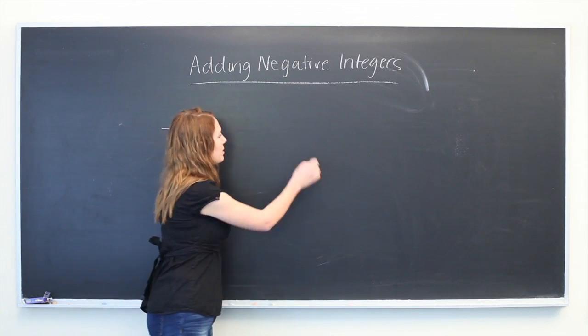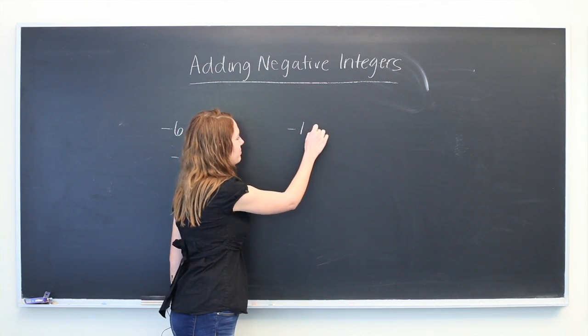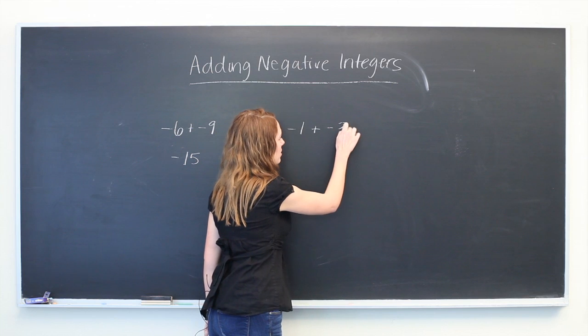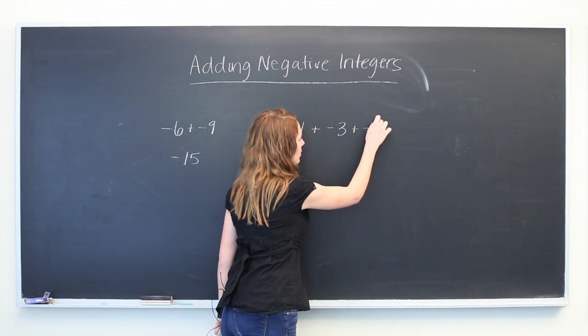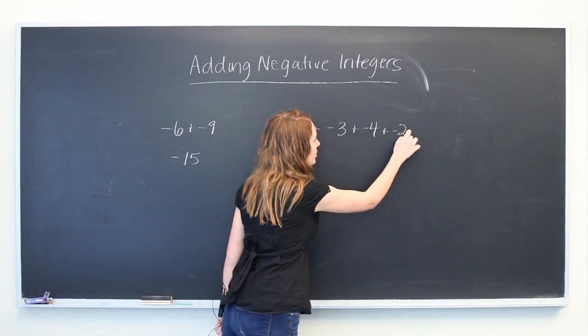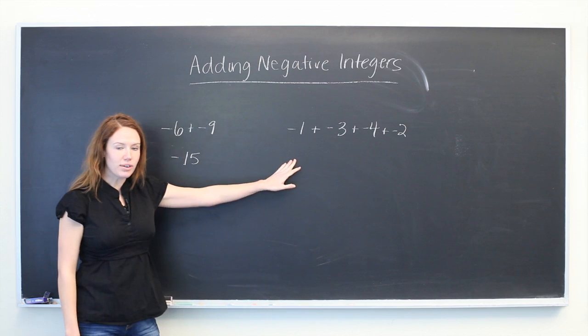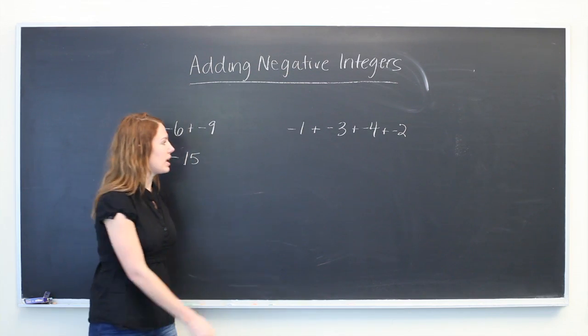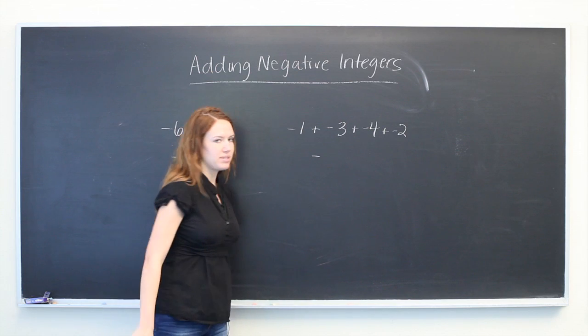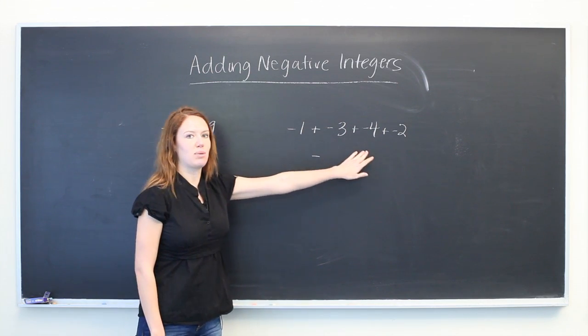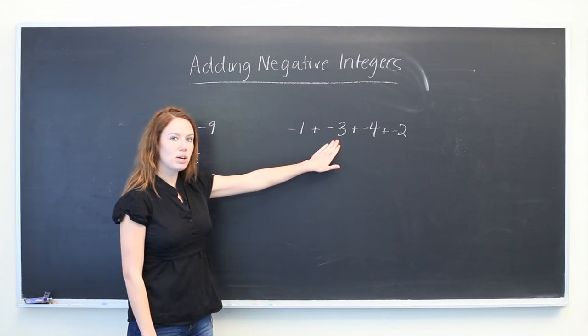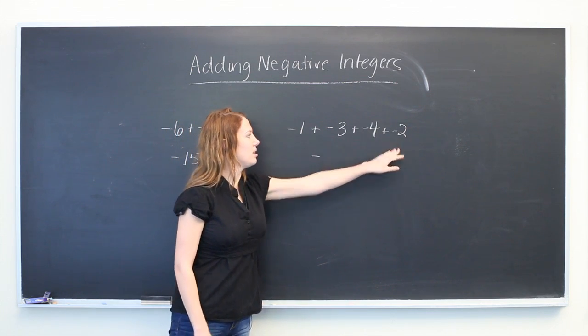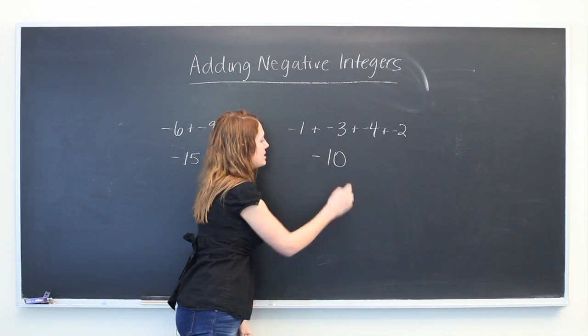So now let's look at a bit of a different example, where we're adding four negative integers and since they're all negative, again we can carry down our negative sign and just add them as if they were all positive. So 1 plus 3 is 4, plus 4 is 8, plus 2 is 10.